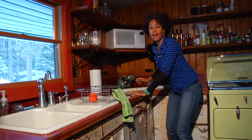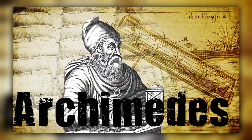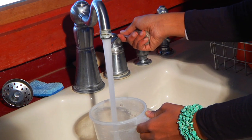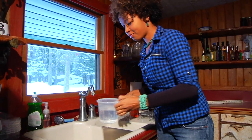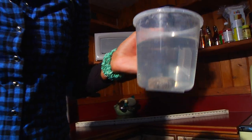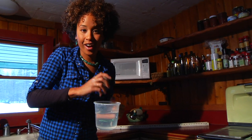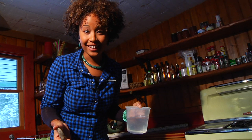And get this — way back over 2,000 years ago, a mathematician named Archimedes developed a method to measure the volume of irregular shaped objects. You can just put this rock in water and measure how much the water level rises, and that equals the volume of the rock. Pretty cool, huh? And now that I know the mass and the volume, I can calculate its density.